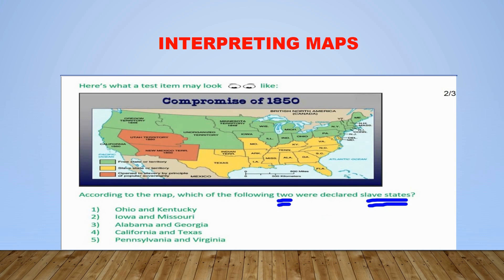So now we can look at our options. When we come to option number one, we have Ohio and Kentucky. We want to identify those two states on our map. When we identify Ohio, we have it here. When we identify Kentucky, we have it here. We see that Ohio is green, and so therefore it represents a free state. Kentucky is yellow, representing a slave state. However, both are not slave states, and so we're going to eliminate option number one because it does not apply.